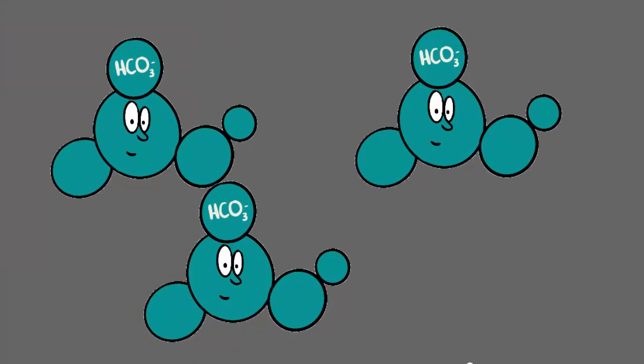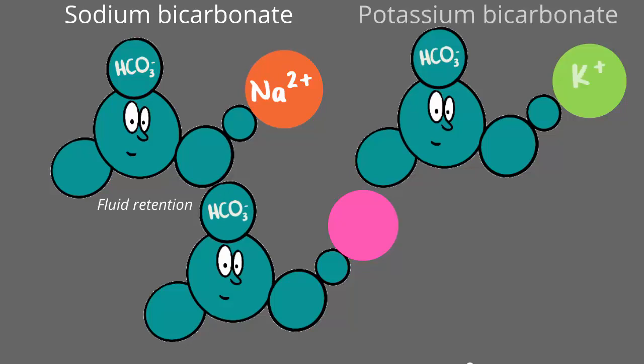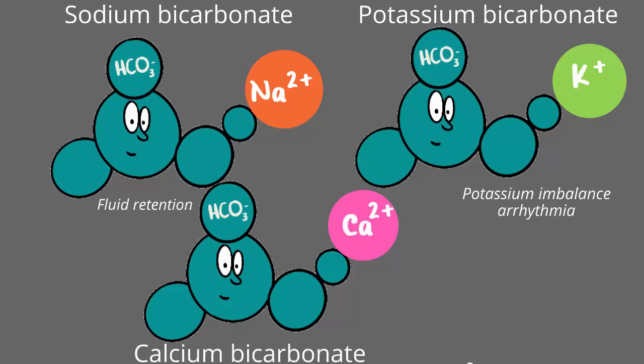There's also the problem of what the bicarbonate comes with. Chemistry dictates that negative ions must always travel with a positive ion, meaning the body doesn't just get the benefits of bicarbonate — it also must handle that positive ion. In the case of sodium bicarbonate, the excess sodium ion puts you at risk of fluid retention. In the case of potassium bicarbonate, you're at risk of potassium imbalances, which can cause serious arrhythmias. And in the case of calcium carbonate, you can develop milk alkali syndrome.